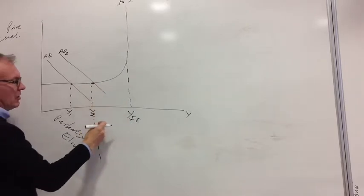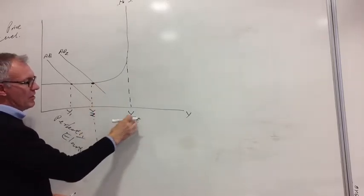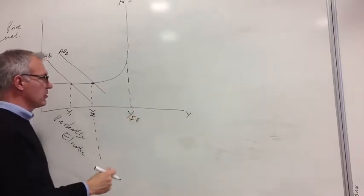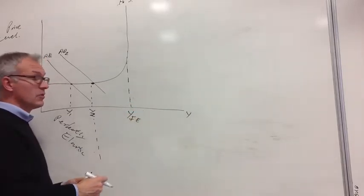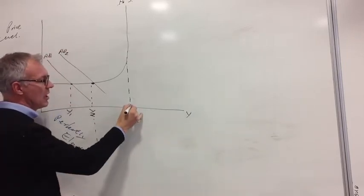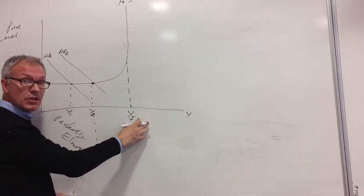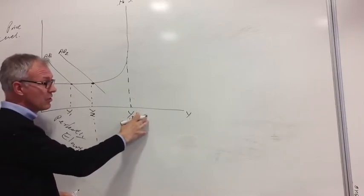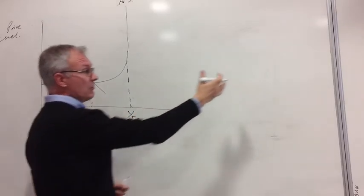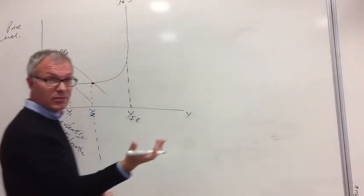However, in the next stage, between Y2 and YFE, this is the full employment level of output here, that's equivalent to the aggregate demand for workers equaling the aggregate supply of workers in the economy, with only a few people between jobs, if you look up unemployment or a little bit of frictional output. So this is the full employment level of income, similar to the potential output of the PPA.